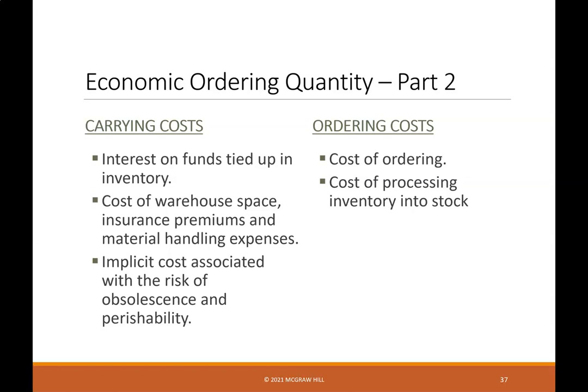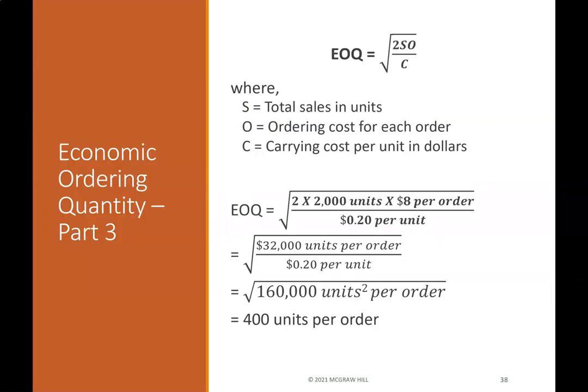EOQ carrying costs include interest on funds tied up in inventory, cost of warehouse space, insurance premiums, material handling expenses, and implicit costs associated with the risk of obsolescence and perishability. Ordering costs include the cost of ordering and cost of processing inventory into stock. The EOQ formula is the square root of (2S × O) / C, where S equals total sales in units, O equals ordering costs for each order, and C equals carrying costs per unit in dollars.